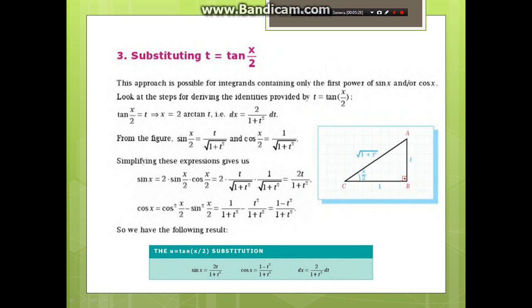From t = tan(x/2), we have x = 2 arctan(t), so dx = 2/(1 + t²) dt. From the figure, sin(x/2) and cos(x/2) can be found. Simplifying these expressions using double angle formulas, we have sin x = 2t/(1 + t²) and cos x = (1 - t²)/(1 + t²).